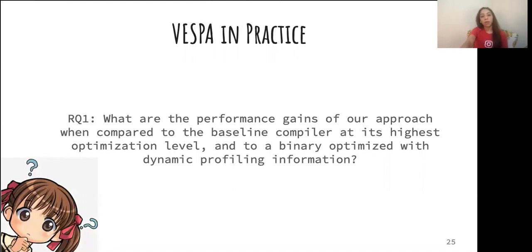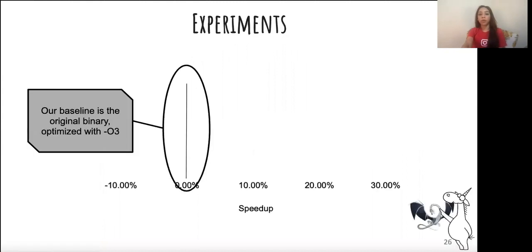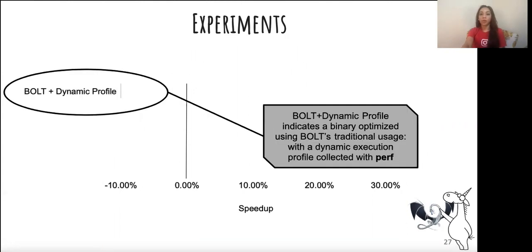In this paper, we explore the following research question: What are the performance gains of our approach when compared to the baseline compiler at its highest optimization level and to a binary optimized with dynamic profiling information? Our comparison baseline is the original binary optimized by a compiler, Clang LLVM, at its highest optimization level.